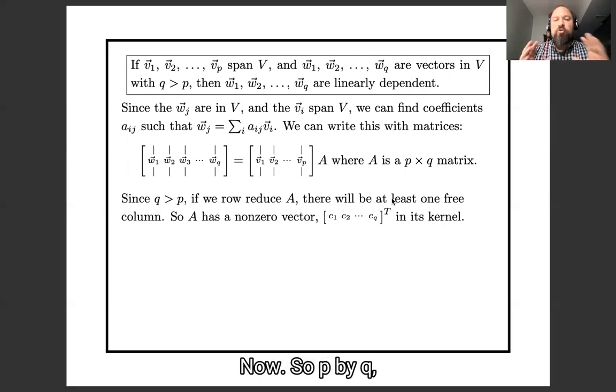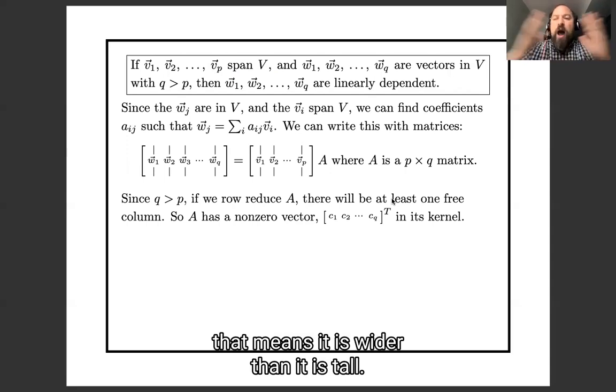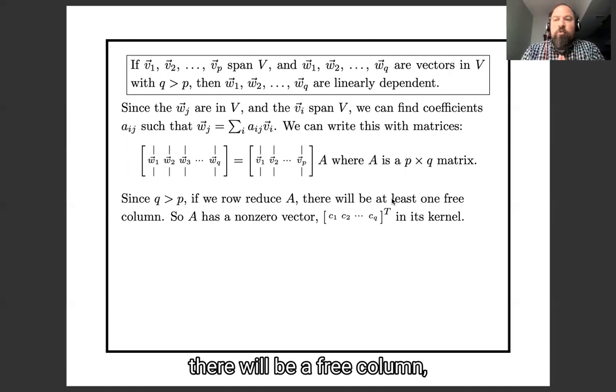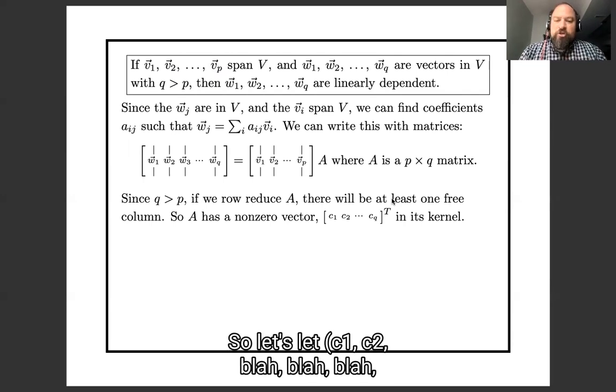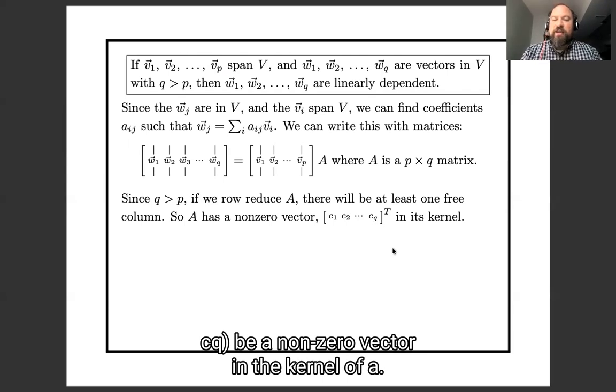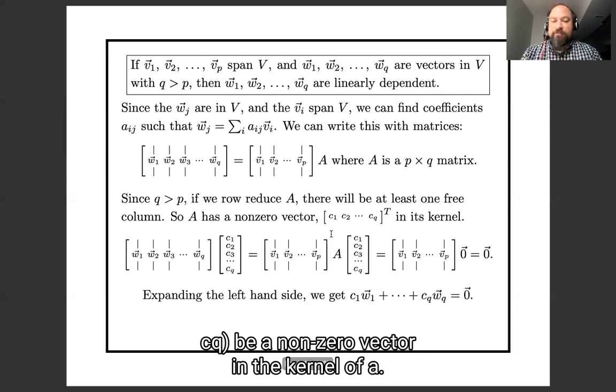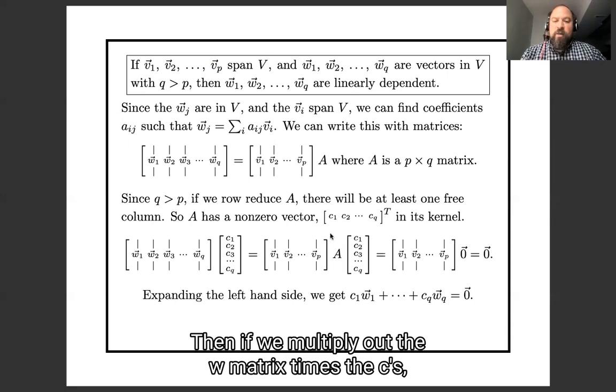Now, p by q means it is wider than it is tall. So if we row reduce it, there will be a free column, which means that A must have a non-trivial vector in its kernel. So let's let c1, c2, blah blah blah, cq be a non-zero vector in the kernel of A.